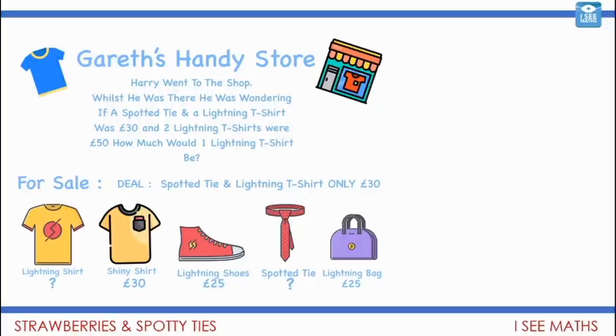Harry went to the shop. Whilst he was there, he was wondering. A spotty tie and a lightning t-shirt were £30. And two lightning t-shirts, £50. But how much would one lightning t-shirt be? And also, how much is the spotty tie? Hmm. Pause the video and see if you can work it out.